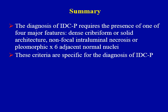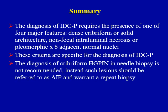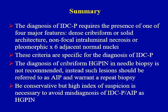In summary, the diagnosis of intraductal carcinoma of the prostate requires one of the four major features: either dense cribriform growth pattern, solid architecture, non-focal intraluminal necrosis, or pleomorphic nuclei six times larger than adjacent nuclei. These criteria are specific for the diagnosis of intraductal carcinoma, but there is significant overlap at the lower-grade spectrum. Therefore, the diagnosis of cribriform high-grade PIN in needle biopsy is not recommended. Instead, such lesions should be referred to as AIP with a repeat biopsy recommendation. In conclusion, you want to be conservative, but a high index of suspicion is necessary to avoid misdiagnosis of intraductal carcinoma and AIP as high-grade PIN. Thank you very much for listening.